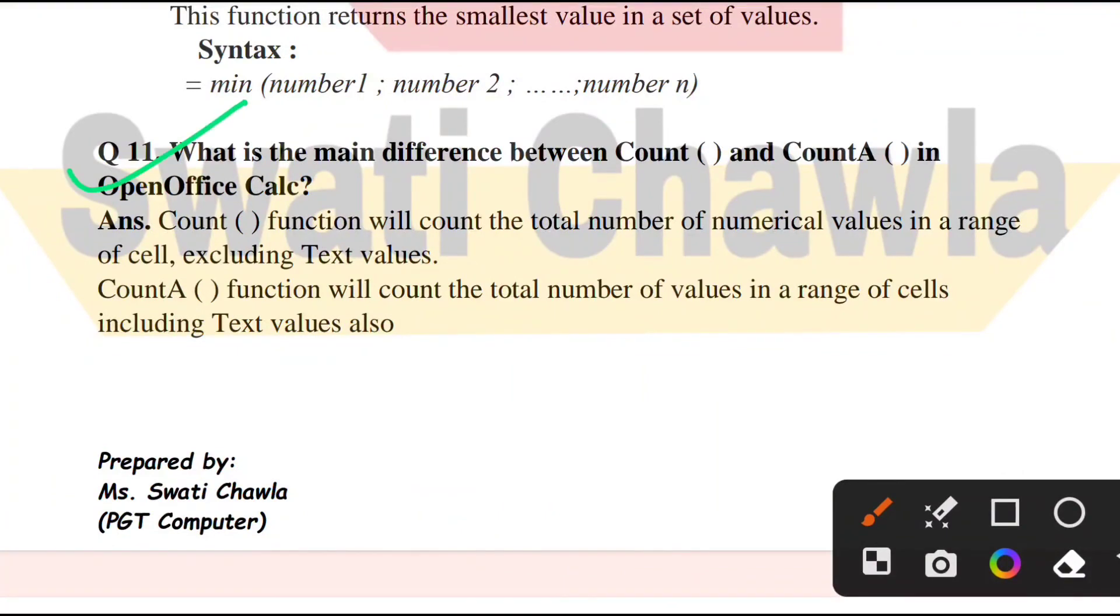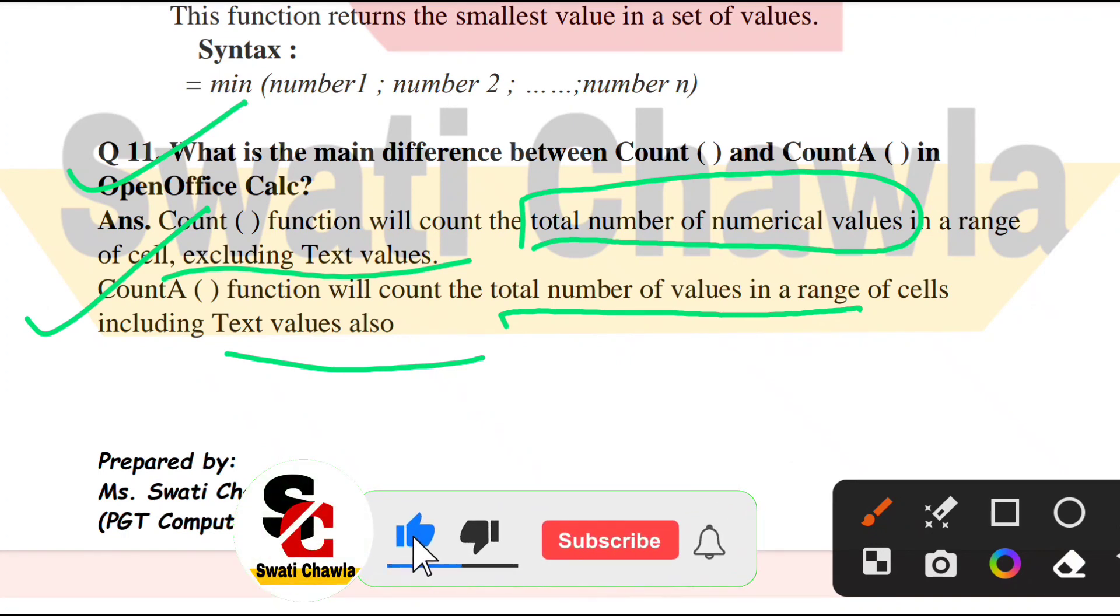Next question: What is the main difference between COUNT and COUNT A in Open Office Calc? COUNT function will count the total number of numerical values in a range of cells, excluding text values. Only numerical numbers you have written like 10, 20, 30 will be counted. COUNT A function will count the total number of values in a range of cells, including text values. COUNT A function includes text values as well.